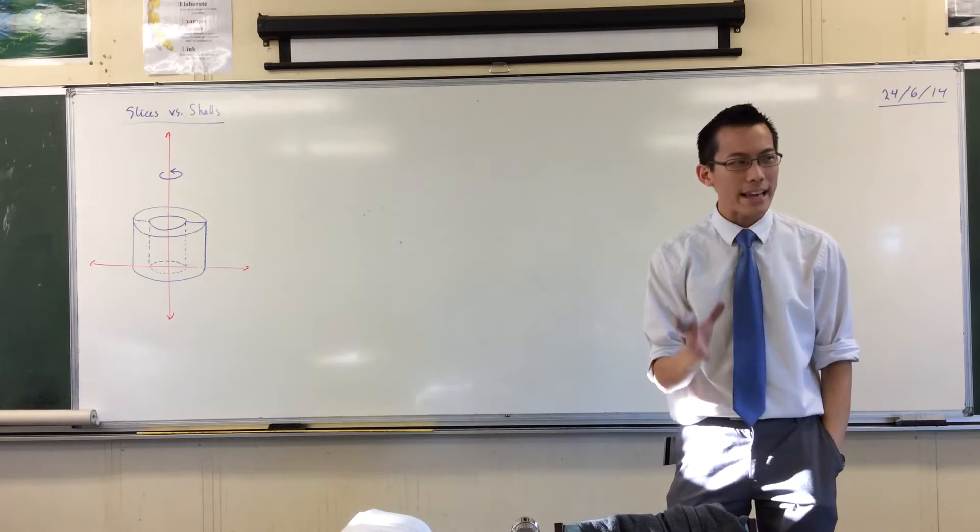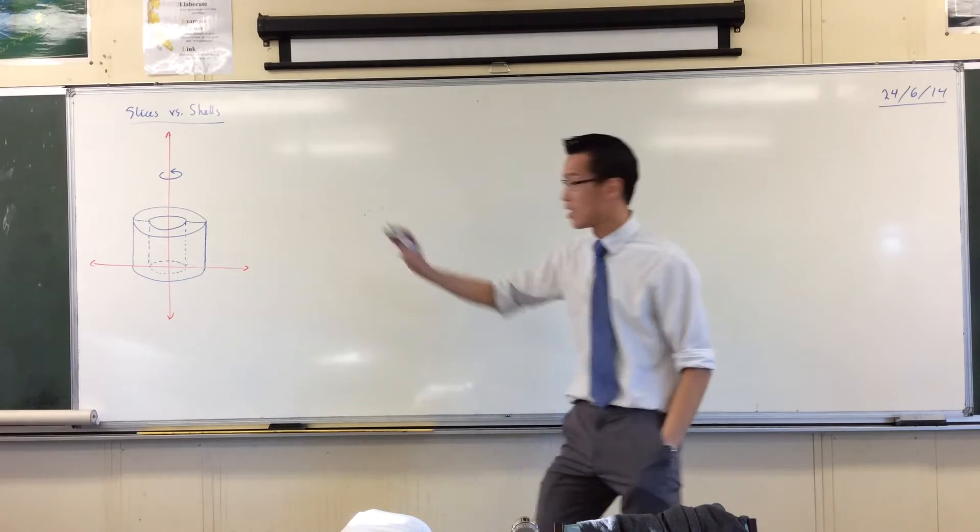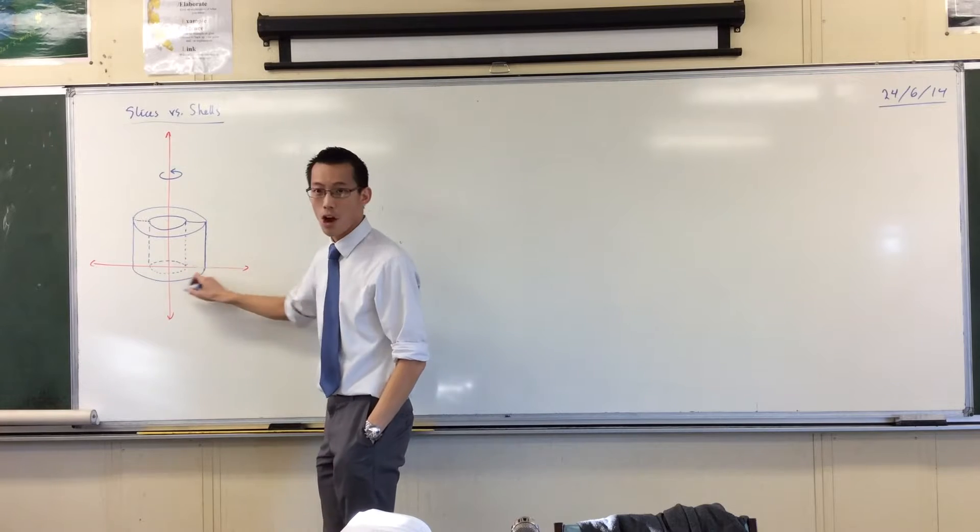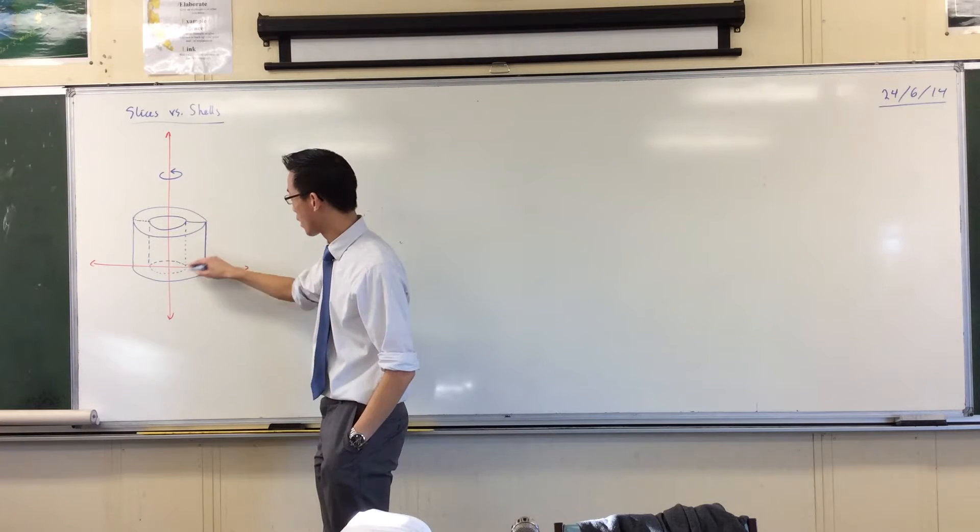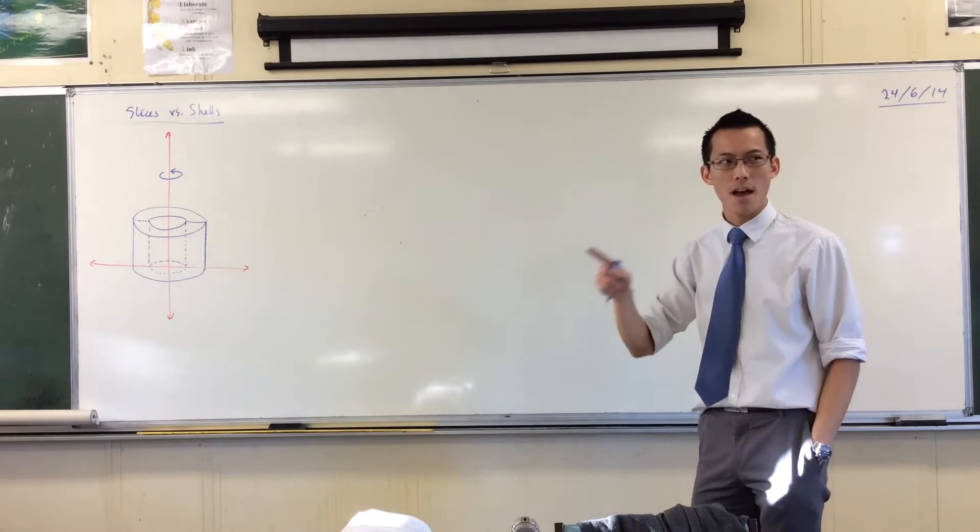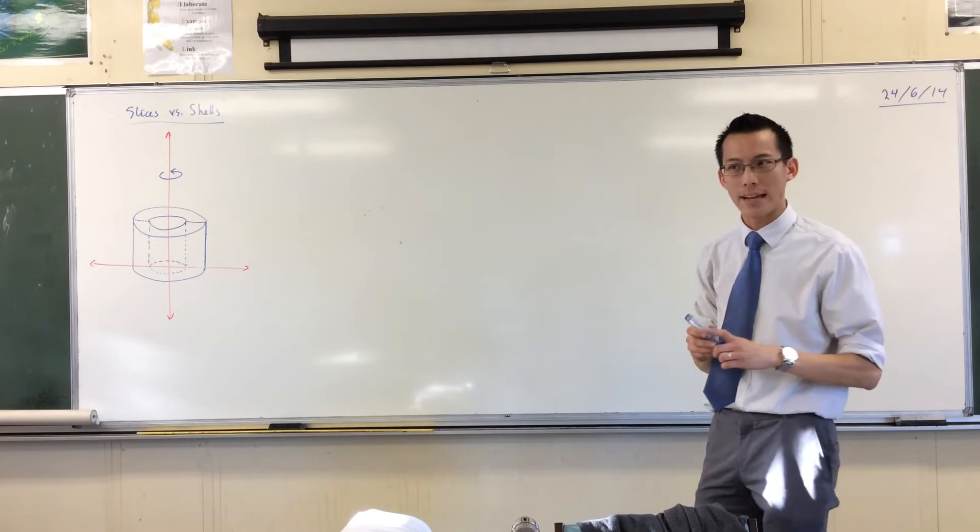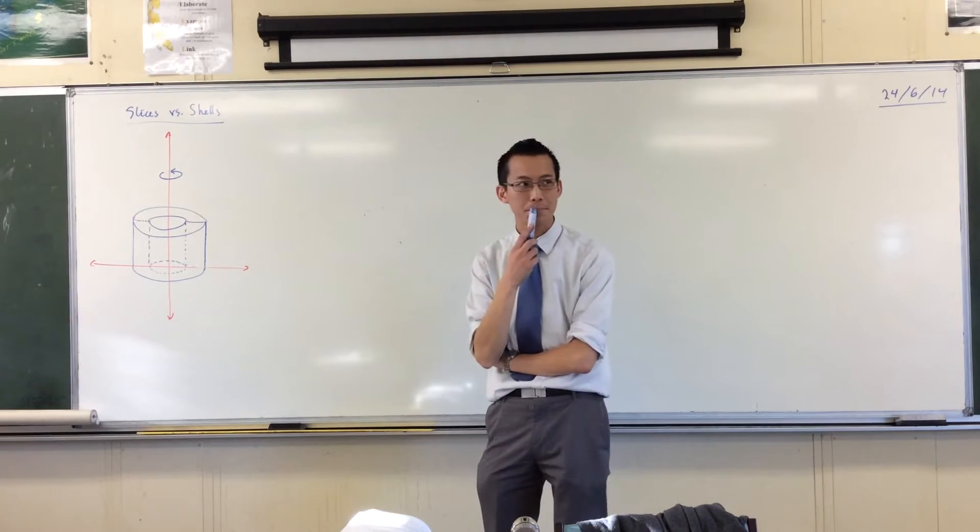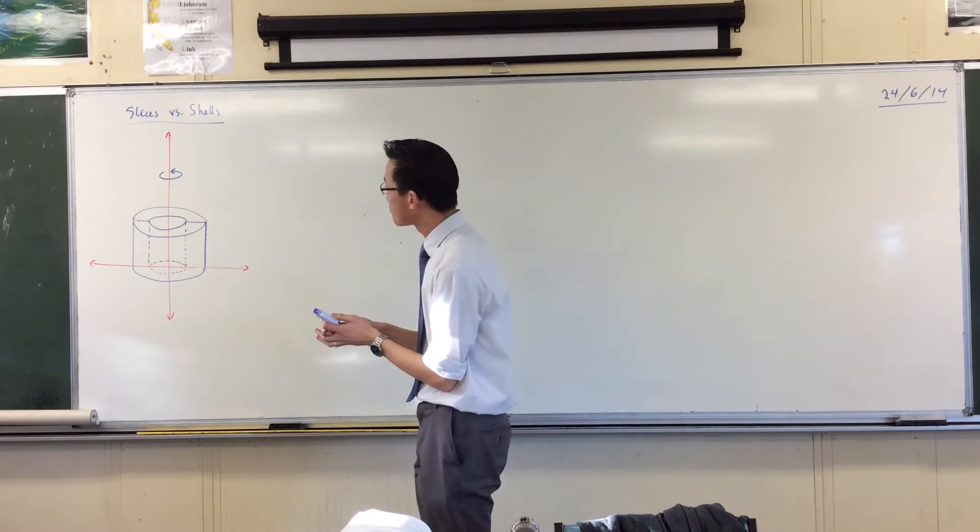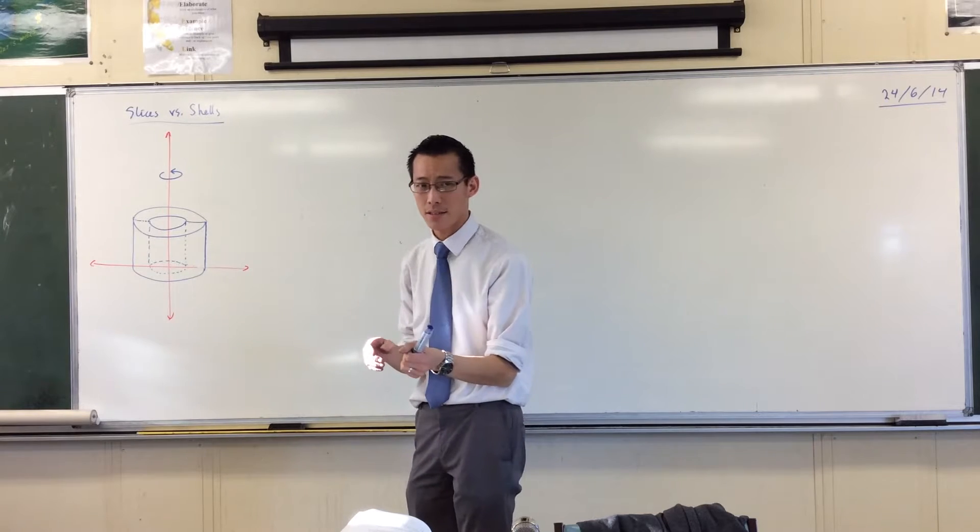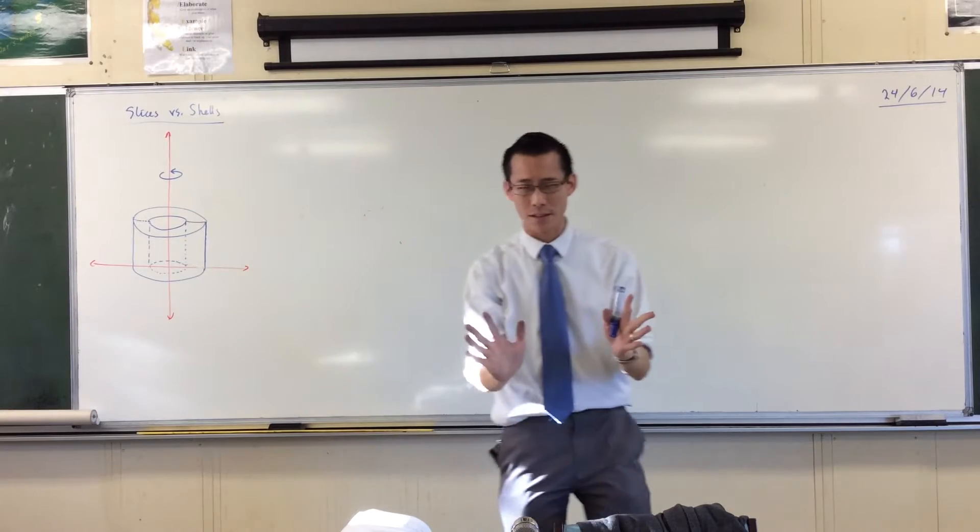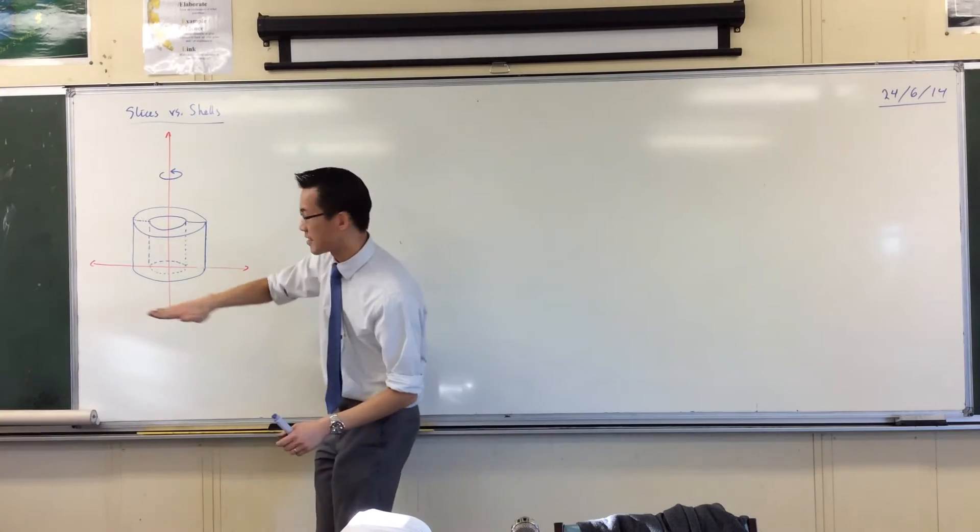So slices - how do I get slices out of a shape like this? Notice, here's my shape. The area that I'm rotating is actually just a rectangle. There's my rectangle, and I've rotated it around the y-axis. So if I wanted to do this particular volume by slices, what kind of shape would I get? Now I should ask, where do I slice? What direction am I slicing in?